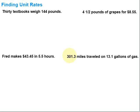Let's take a look at finding unit rates. First of all, we need to understand what unit rates are. Unit rates are simply something per one of something else. There are a number of common ones that we hear every day, such as miles per hour, miles per gallon — dealing with vehicles and driving — and price per pound. Those are all examples of unit rates.